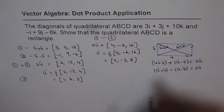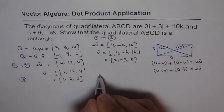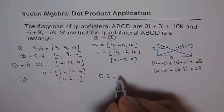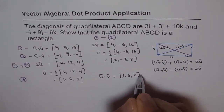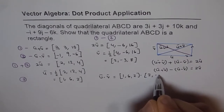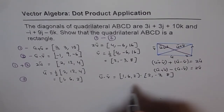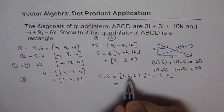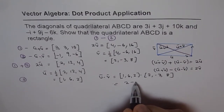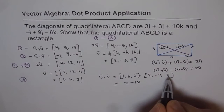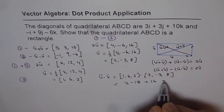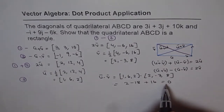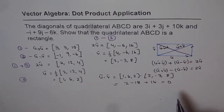Now let's find the angle between u and v using the dot product. u · v = (1)(2) + (6)(-3) + (2)(8) = 2 - 18 + 16 = 0. Since the dot product between u and v is 0 and both u and v are non-zero vectors, they are perpendicular.